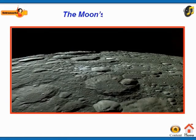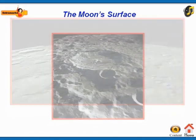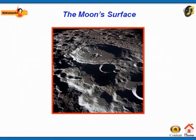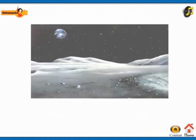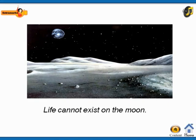The moon's surface is dusty and barren. Many craters of different sizes are there on its surface. A large number of steep and high mountains also exist on the moon. No life can exist on the moon as there is no atmosphere on its surface.